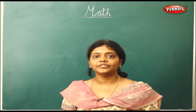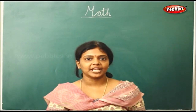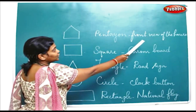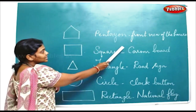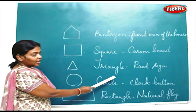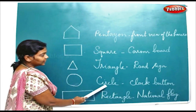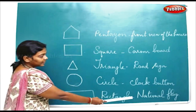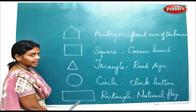Now we shall observe the following picture and identify the given shapes here. A pentagon looks like a front view of a house. A square looks like a carom board. A triangle looks like a road sign and a circle looks like a clock button. The national flag looks like a rectangle.